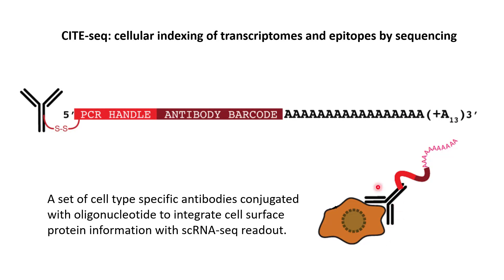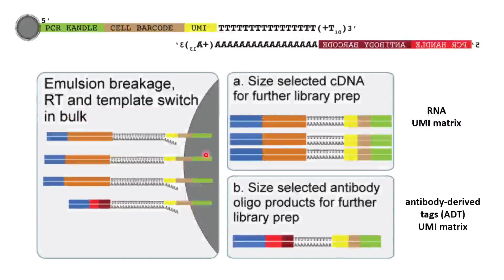Then the cells were washed to remove non-specific binding. After washing, cells were loaded into the Drop-seq machine. The procedure for data collection is the same as single-cell RNA sequencing. Cells are lysed in lysis buffer and each cell is labeled by a cell barcode in the droplet. Because the short nucleotide sequence on the antibody has a poly-A tail, it can bind to the poly-T tails on the beads. The mRNA from the cell and the antibody tag both bind to the poly-T tails on the beads.